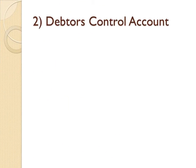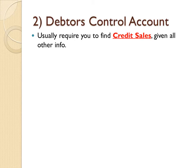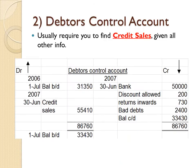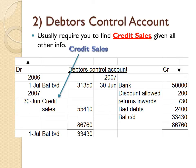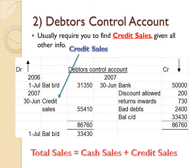The second account to analyze is the debtors control account. This account requires you to find credit sales given all other information about debtors. Earlier we found cash sales from the cash book; from this account we find credit sales. Put them together to get total sales, which goes into your trading account.